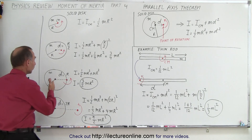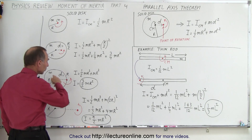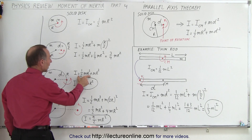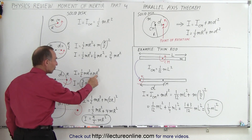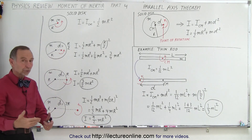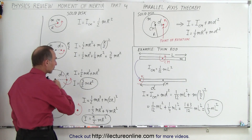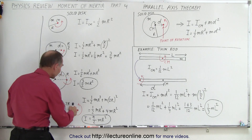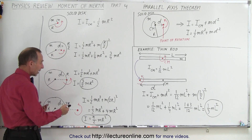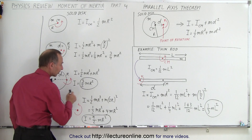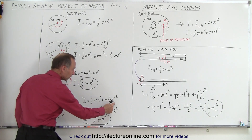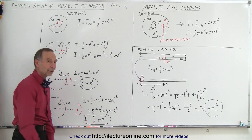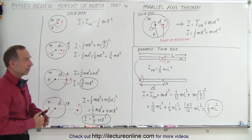What if we move the full radius? What's the moment of inertia of the disk rotating about its edge? The moment of inertia at the center of mass plus the mass times the distance — which is equal to r — so it's mr squared. Add it together, you get three halves mr squared. What if we move a distance twice the radius? Again we take the moment of inertia at the center of mass plus the mass times the distance moved — in this case two r, we get four r squared. Add it together: nine halves mr squared. It's as simple as that.